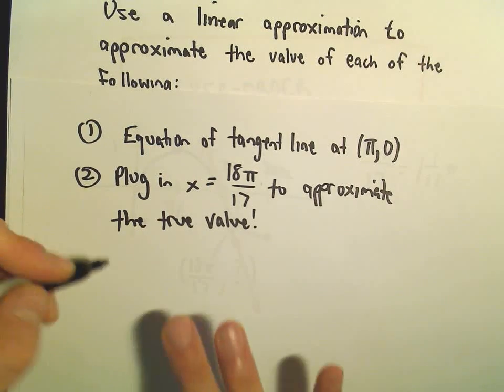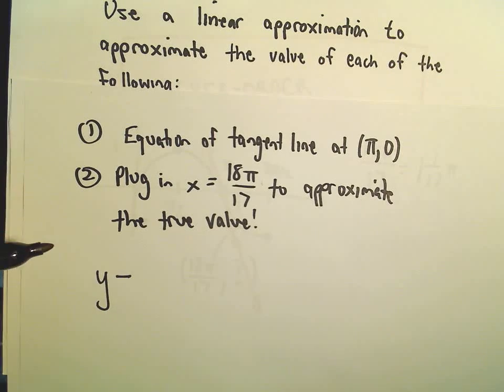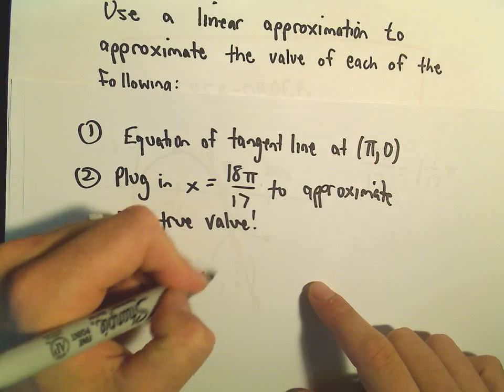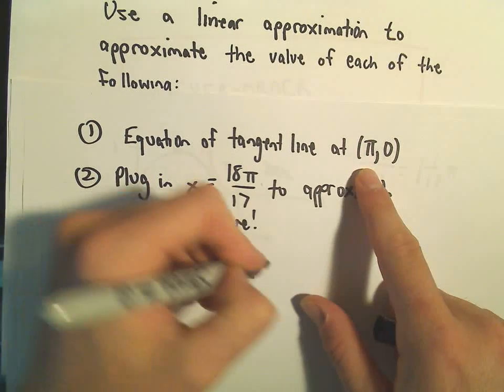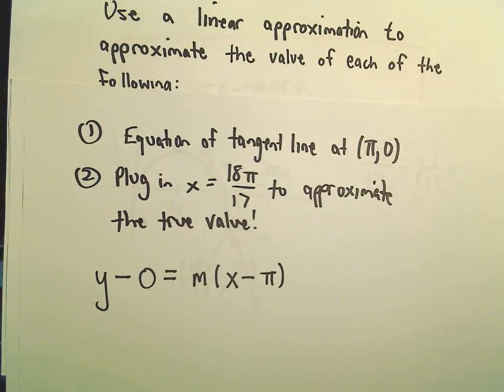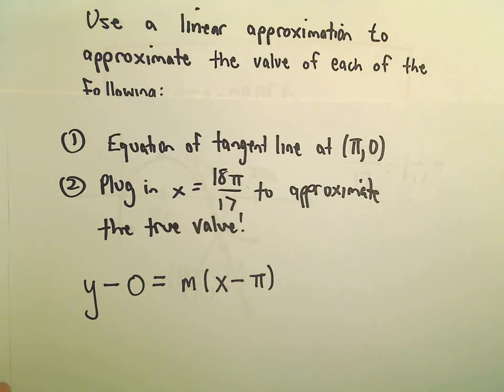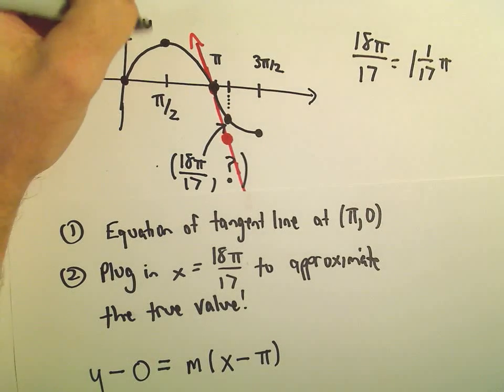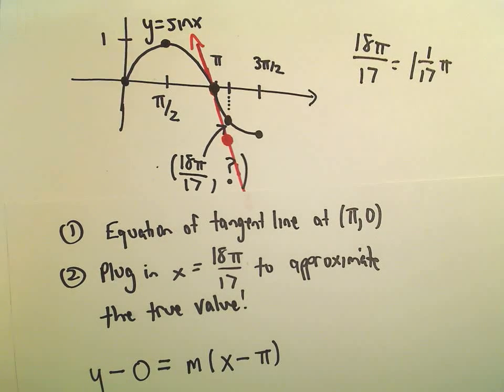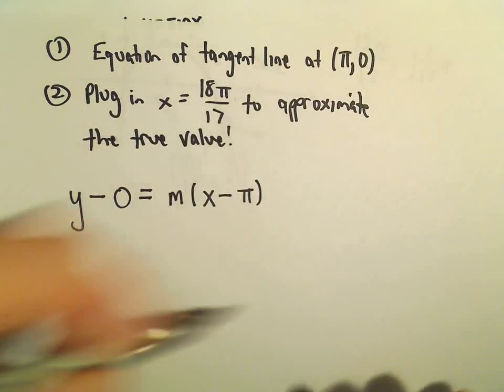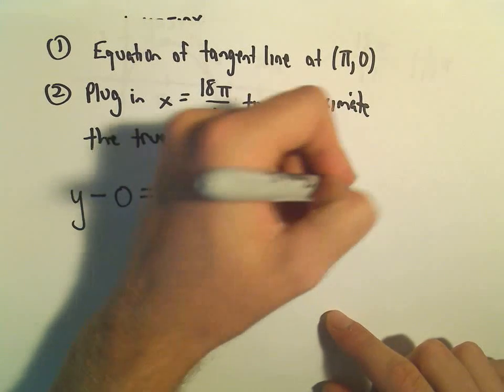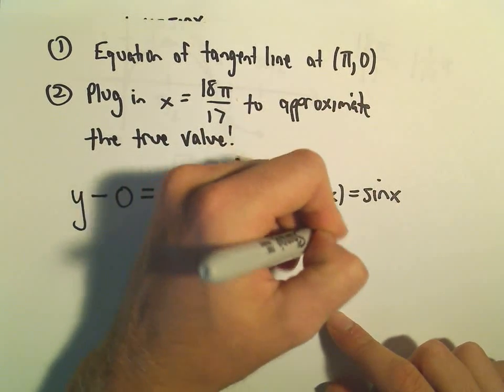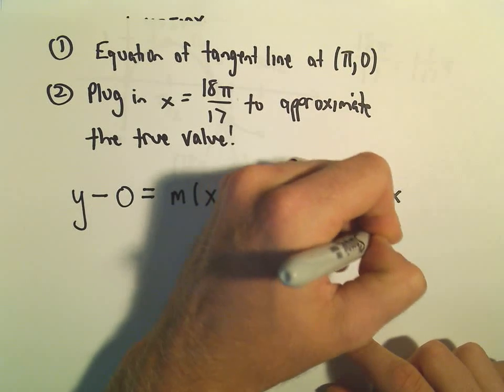All right, so to get the equation of the tangent line, I know it's y minus the y coordinate which is 0. We have to figure out the slope, but we'll take x minus the x coordinate which is just π. And now all we have to do to figure out the slope is take the derivative. We're working on the graph of y equals sine x. So if I let my function be sine x, we know that the derivative of sine x is just cosine x.